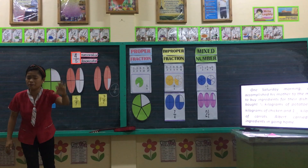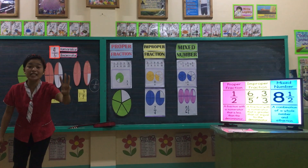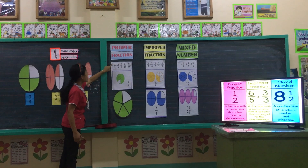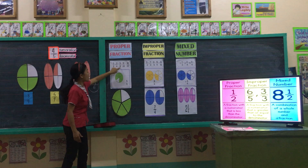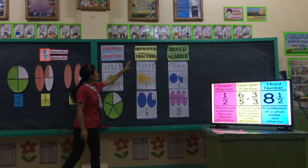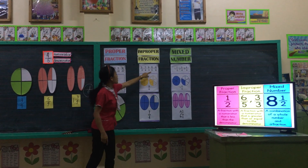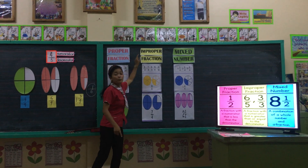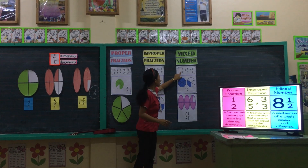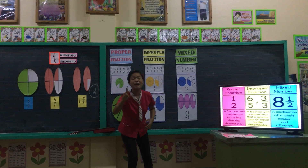Again, what are the three types of fractions? Proper fraction, improper fraction, and mixed number. So we have here another set of examples. The numerator has a smaller value compared to its denominator — that is proper fraction. The numerator has a bigger value or is equal compared to its denominator — that is improper fraction. And lastly, a combination of a whole number and a proper fraction — that is a mixed number.